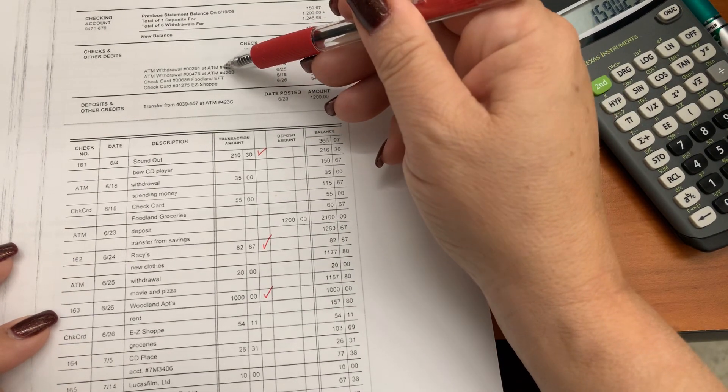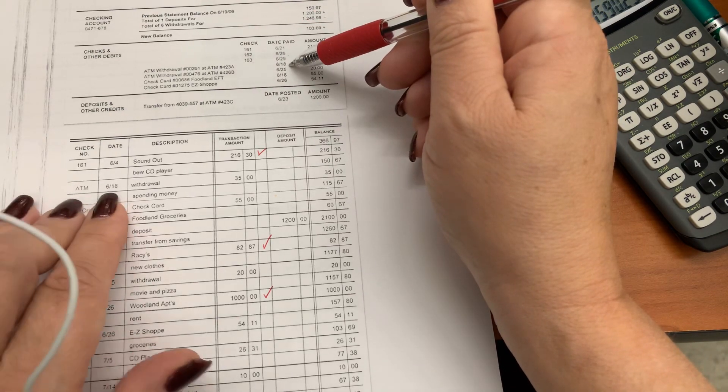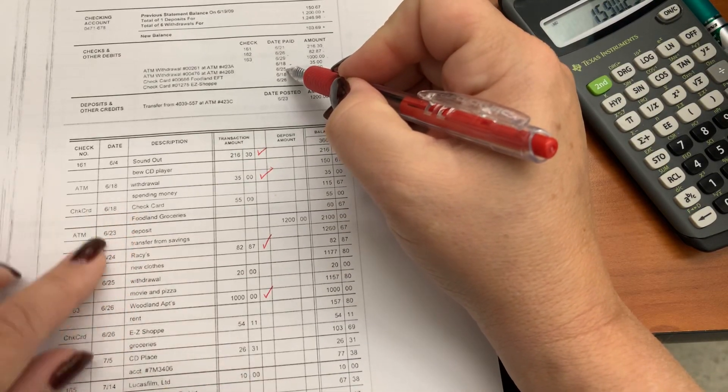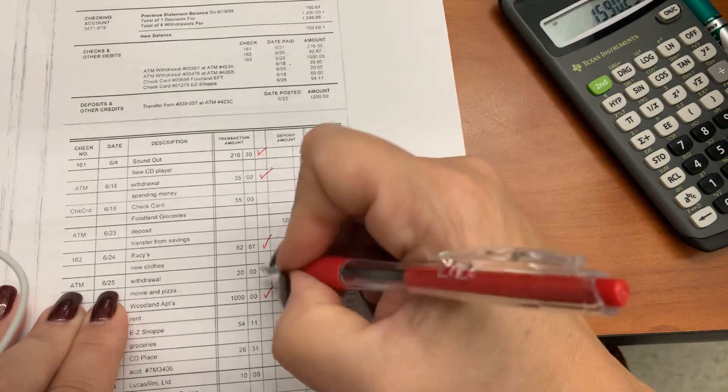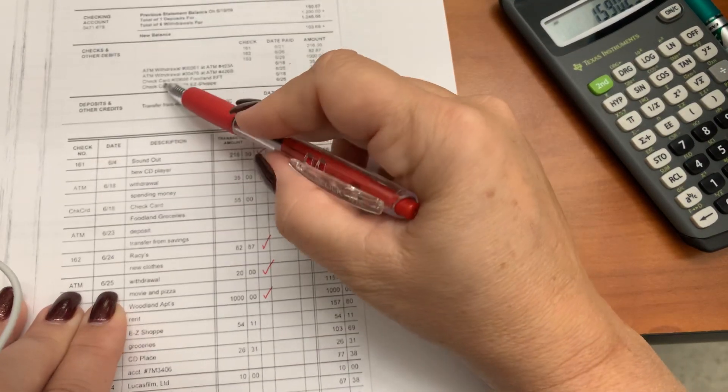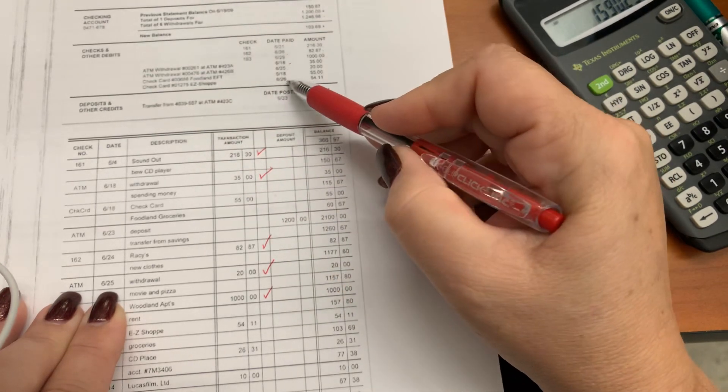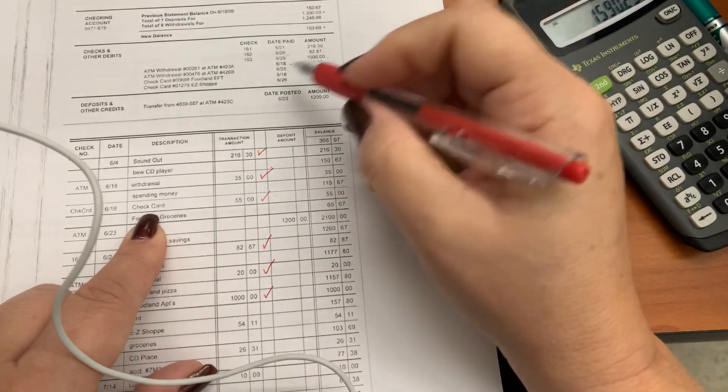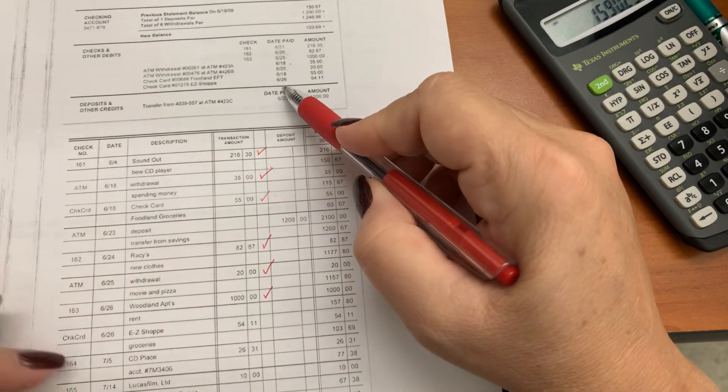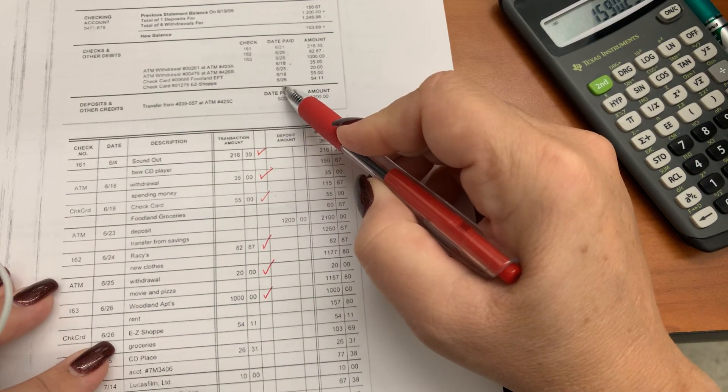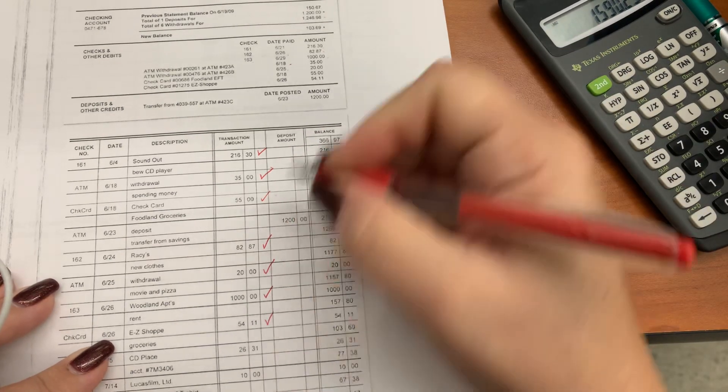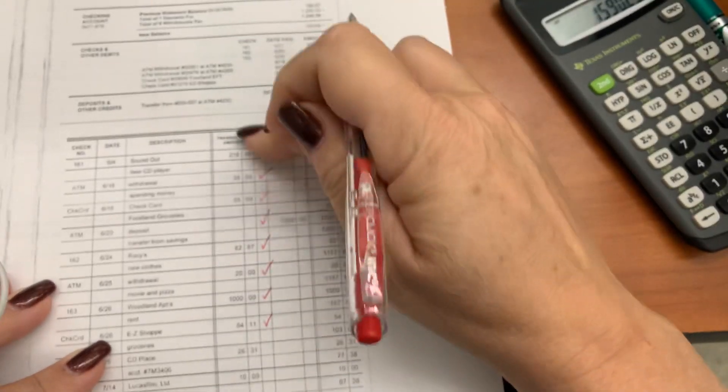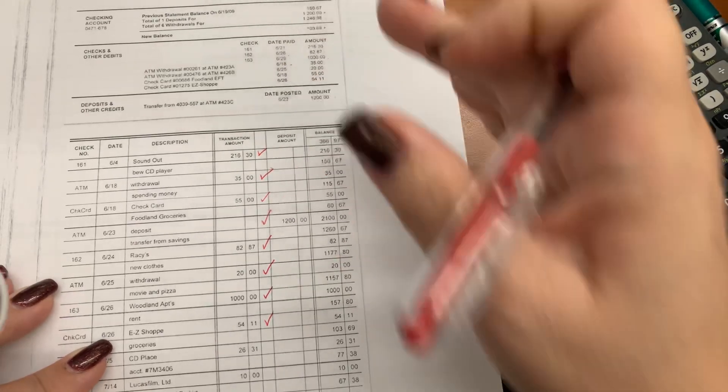Then I have an ATM withdrawal on 618. So here's 618. ATM withdrawal, $35. Then I have an ATM withdrawal on 625, $20. Then I have a check card used at Foodland for $55 on 618, and then another check card transaction on 626 at the Easy Shop for $54.11. And then the last thing I have to mark off is my deposit for $1,200. So all these things with red checks have gone through my checking account according to the bank.